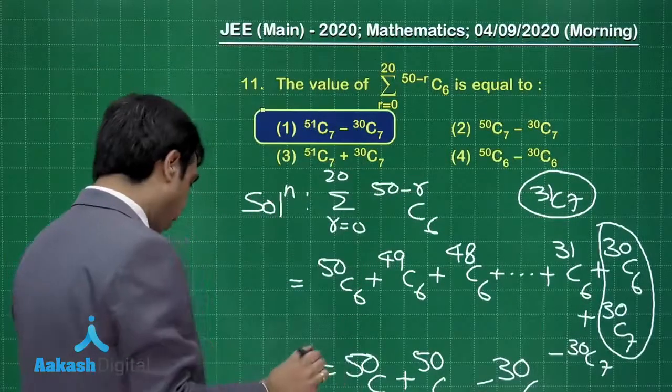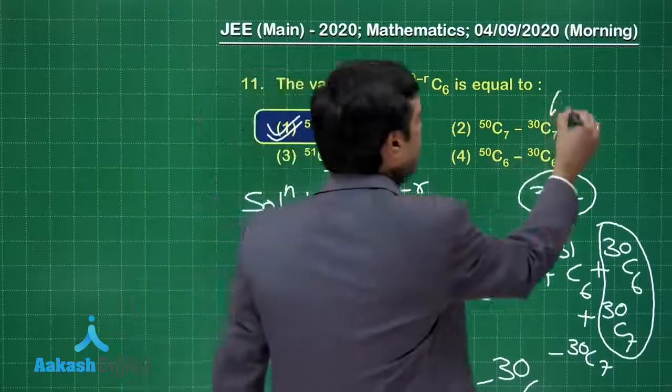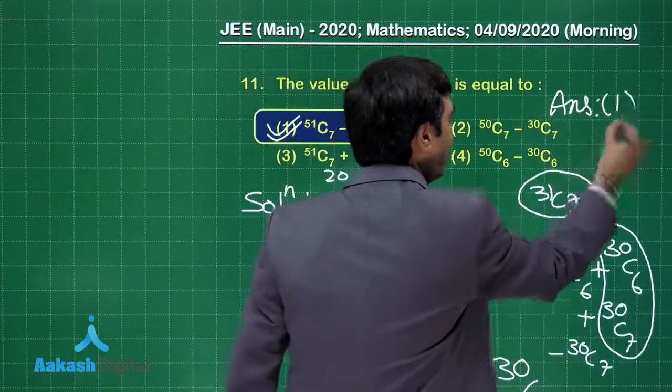Time to check from the given options: 51 C 7 minus 30 C 7. That is correct. Answer is option number one. I am sure this question is clear.